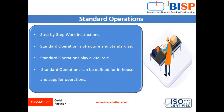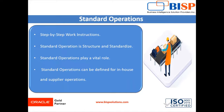Manufacturing standard operations are step-by-step work instructions that guide operators through a task. The main goal of setting up a standard operation is to structure and standardize the way in which the work is done, making it accurate and easy to follow. Standard operations help increase the efficiency and safety of operations, and they unify the way in which different operators perform the same task.